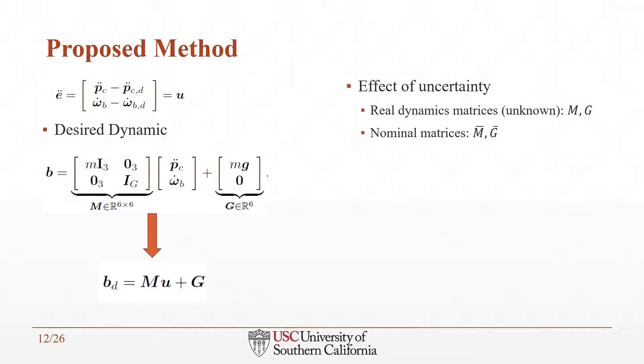If we consider uncertainty in dynamics and assume that the matrices M and G of the real dynamics are unknown, we then have to design our controller based on nominal matrices M bar and G bar. Therefore, the desired dynamic can be represented as follows. The model uncertainty that appears as theta in the equation is a function of time and a state variable.